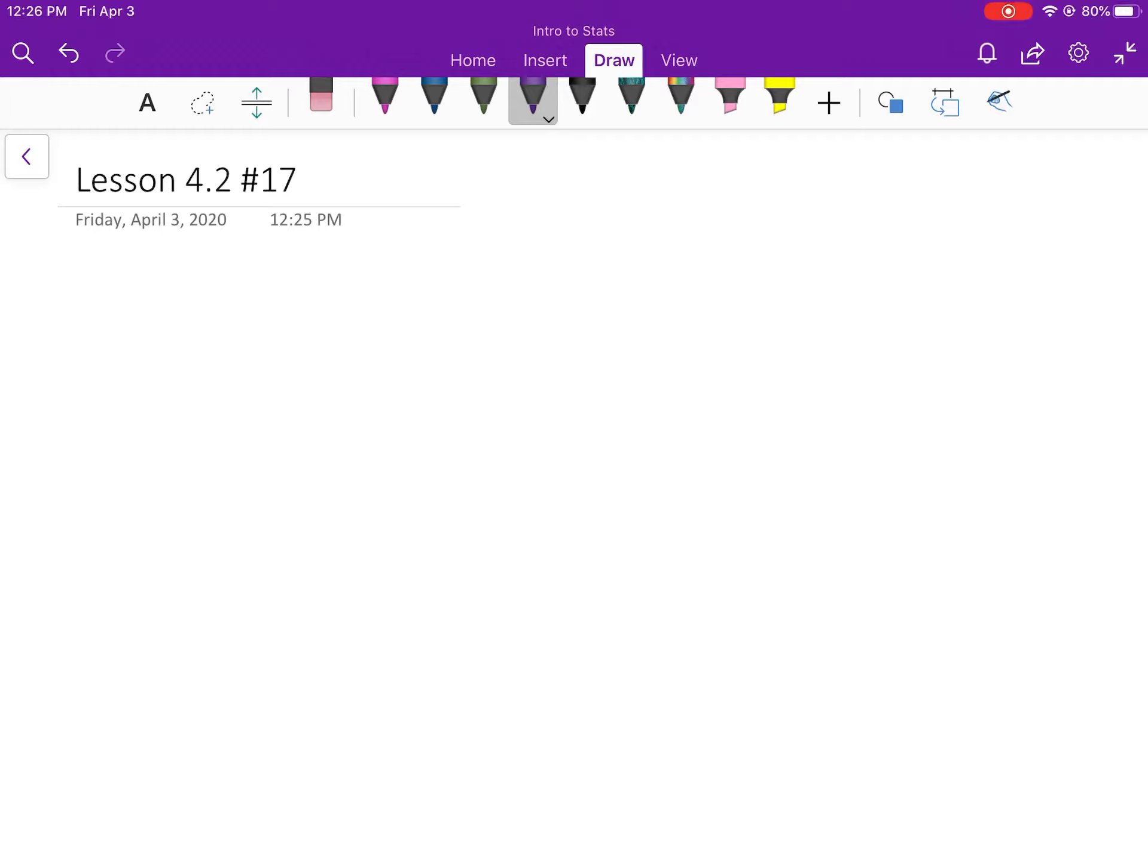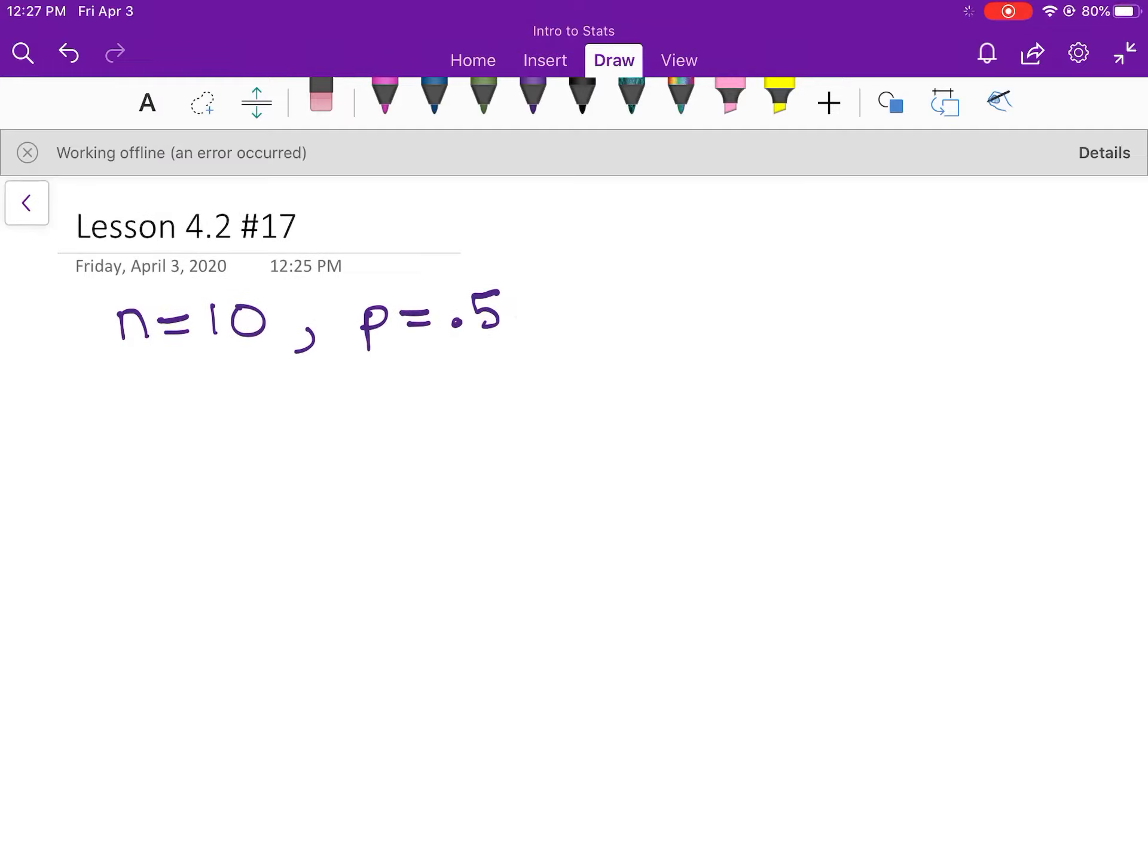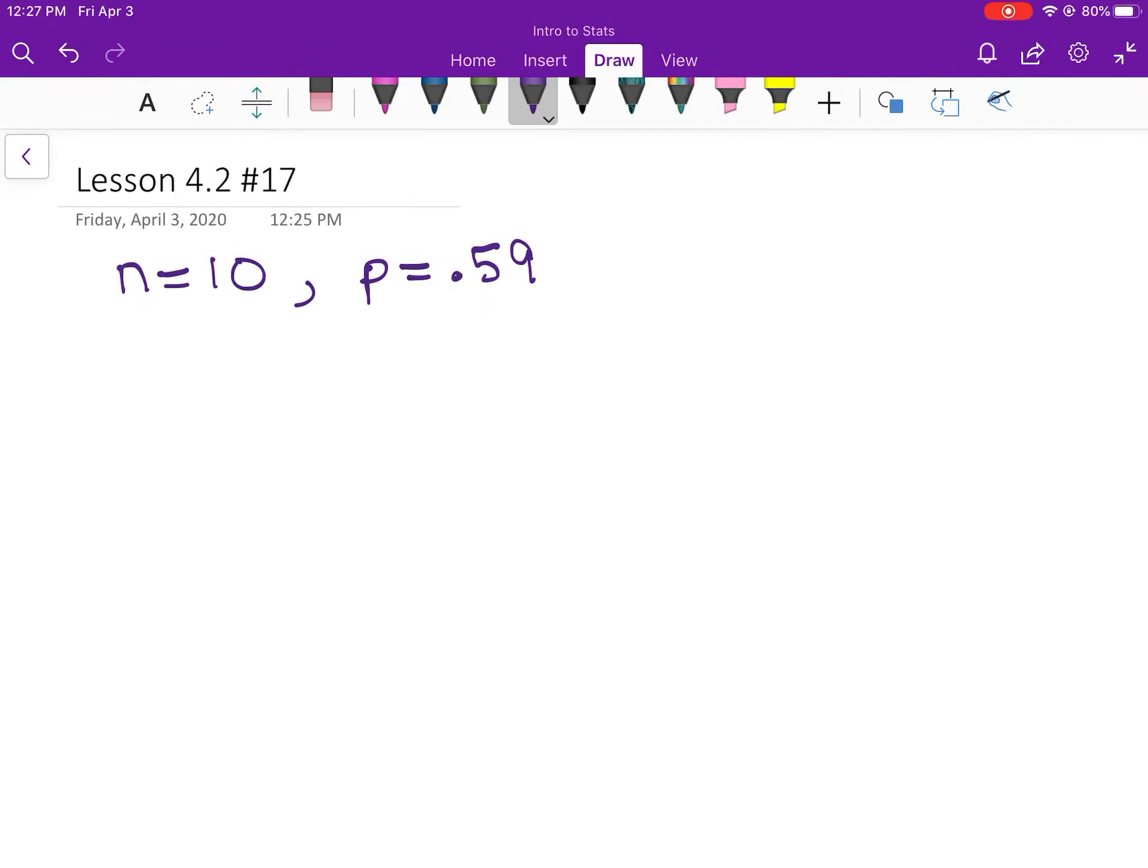Before we even get started, let's set up everything we know. We know that they talk to 10 men, so n is 10. Your p is 59%, so 0.59.